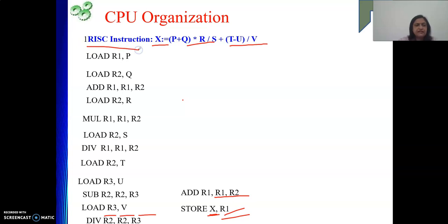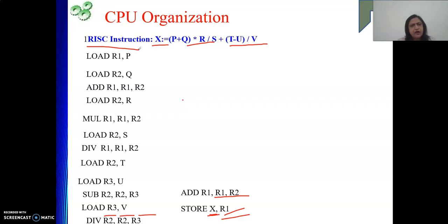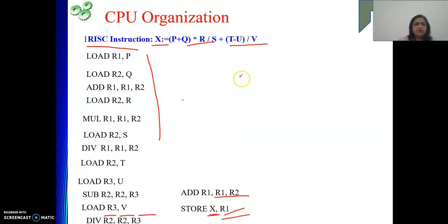This is how we can solve an expression using RISC instructions. To summarize: RISC instructions perform all operations using three operands, all in registers. The same register can serve as both source and destination. The load instruction is used to bring operands into registers, and the store instruction is used to write results back to memory. Thank you.